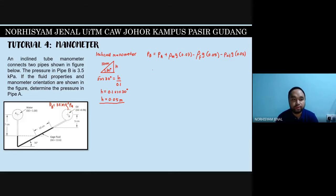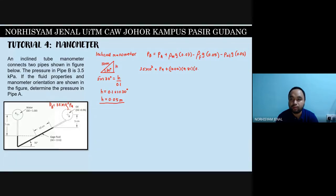Now we need to find the pressure in pipe A. Filling in the numbers: Pb is 3.5 × 10³ equals Pa, plus rho_water which is 1000 × 9.81 × 0.07, then minus rho_gauge_fluid — the gauge fluid density is 13.6 × 1000 × 9.81 × 0.05.